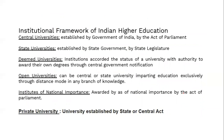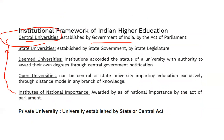The institutional framework of higher education consists of central universities, state universities, deemed universities, open universities, and institutes of national importance, along with private universities. Central universities are governed by an Act of Parliament; state universities by state legislature; deemed universities have university status with authority to award degrees; open universities impart education via distance mode; institutes of national importance function through parliament; and private universities are established by state as well as central acts.